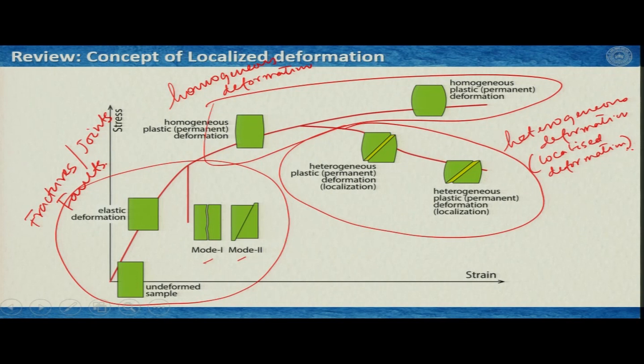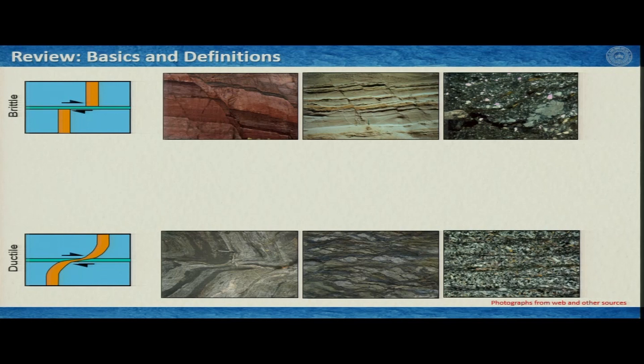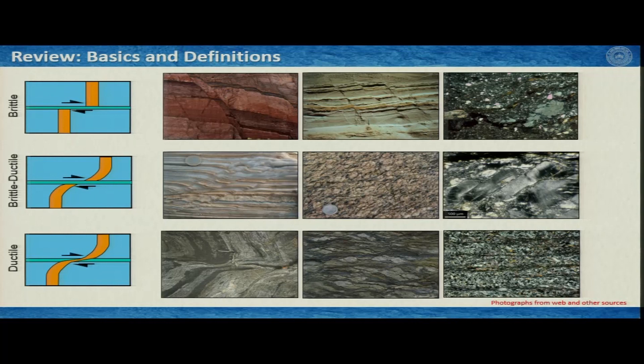At high pressure and temperature, when deformation is not distributed in the entire rock mass but is restricted along a narrow zone, we have localization of deformation. This is the concept of ductile shear zones. We have also learned that in the brittle domain we have the fault range, in the ductile domain rocks deform in a ductile manner, and in between we have brittle-ductile deformation where rocks show both signatures.